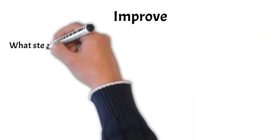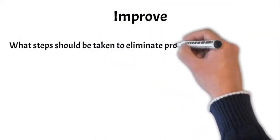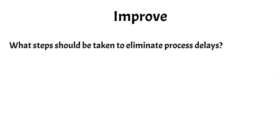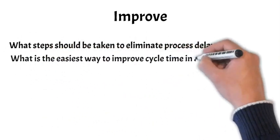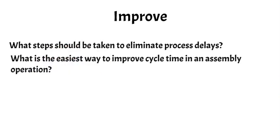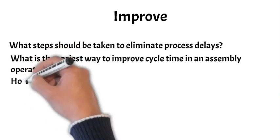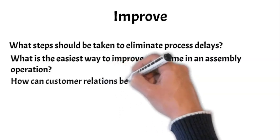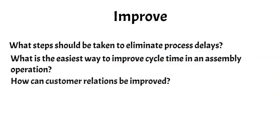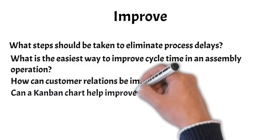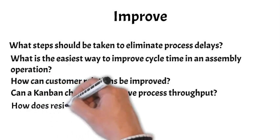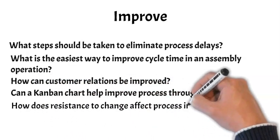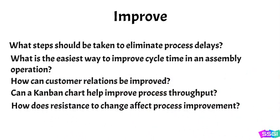Improve. What steps should be taken to eliminate process delays? What is the easiest way to improve cycle time in an assembly operation? How can customer relations be improved? Can a Kanban chart help improve process throughput? How does resistance to change affect process improvement?